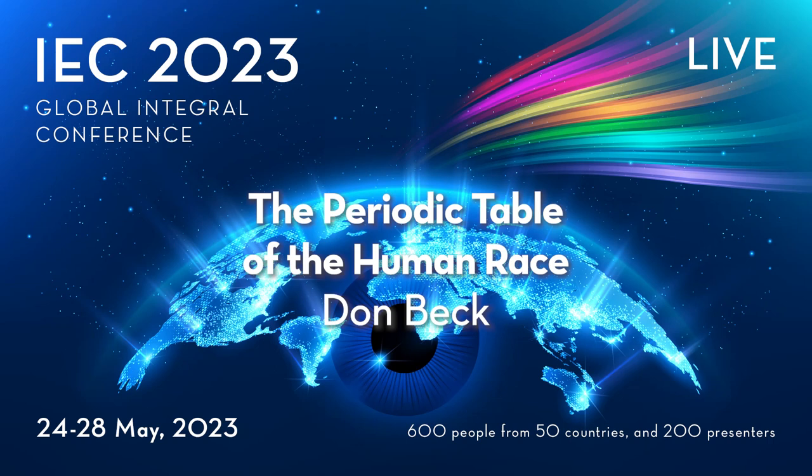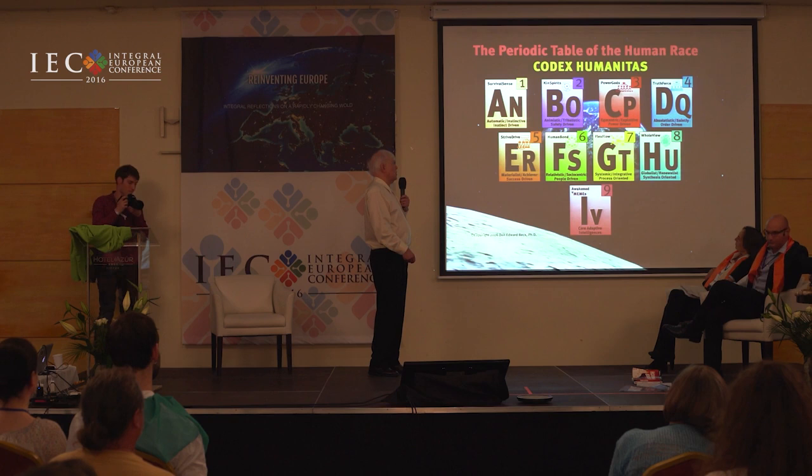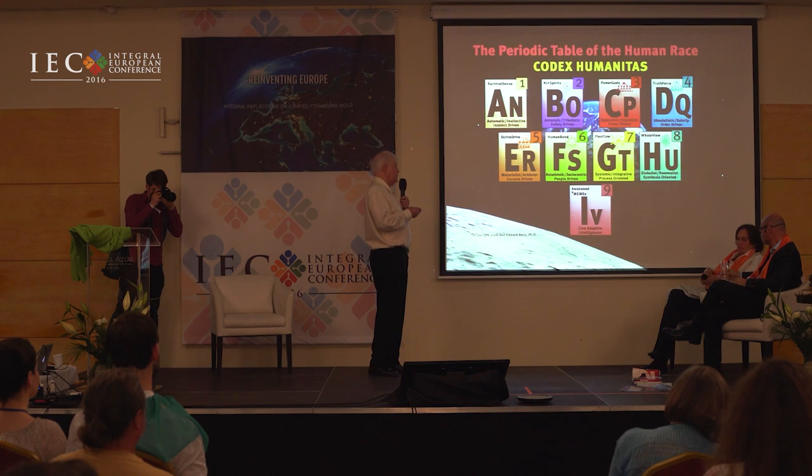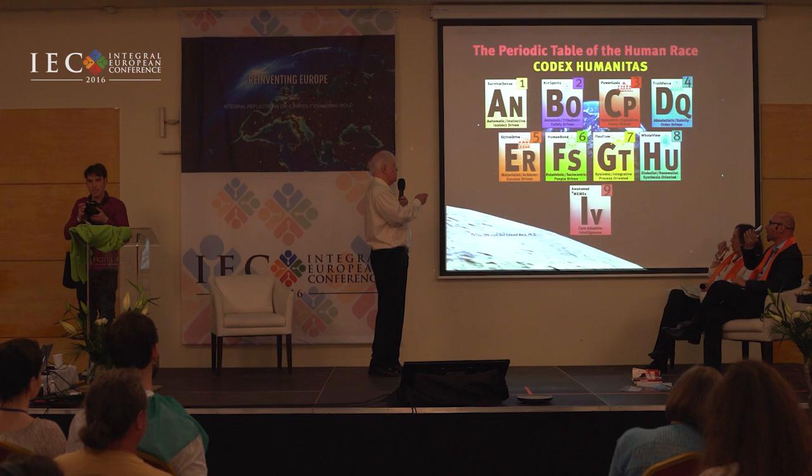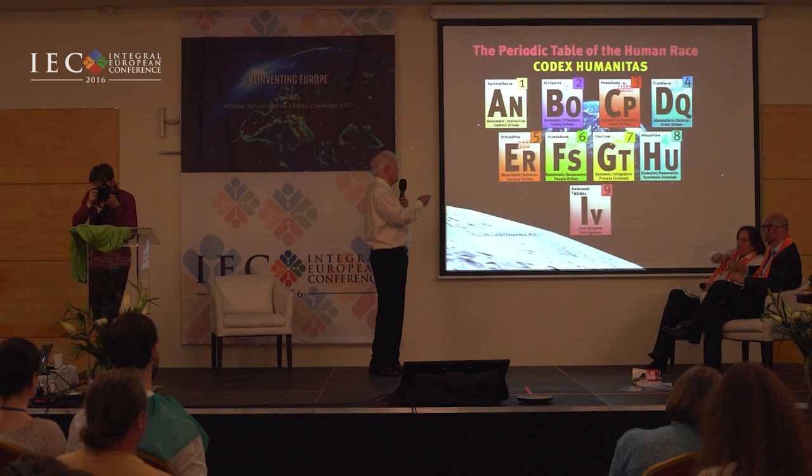A quick summary, because I'm speaking in terms of codes, and what you've got here is a display of the eight codes thus far. The first letter represents life conditions — problems A, living in the rainforest. The second letter is the adaptive intelligence to solve the problems in those life conditions.